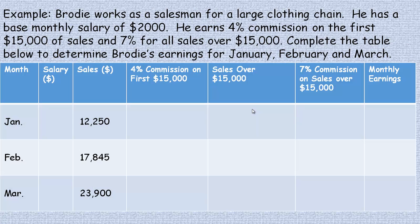We'll take a look at one example. Brodie works as a salesman for a large clothing chain. He has a base monthly salary of two thousand dollars, so he makes two thousand dollars regardless of how much he sells. He earns a four percent commission on the first fifteen thousand dollars of sales, and seven percent for all sales over fifteen thousand dollars. Complete the table below to determine Brodie's earnings for January, February, and March.